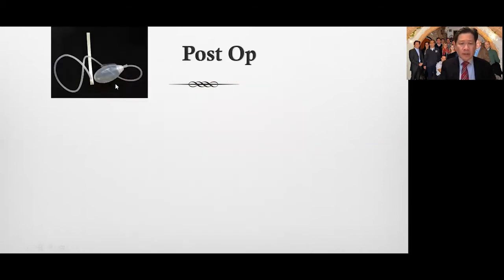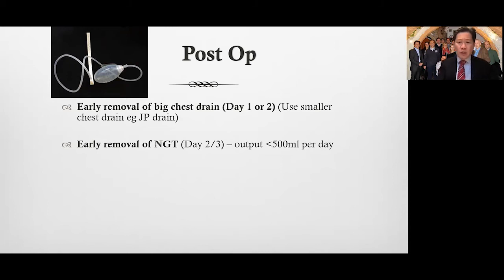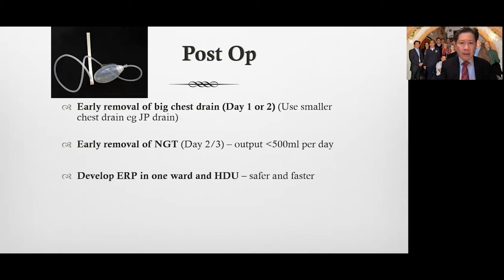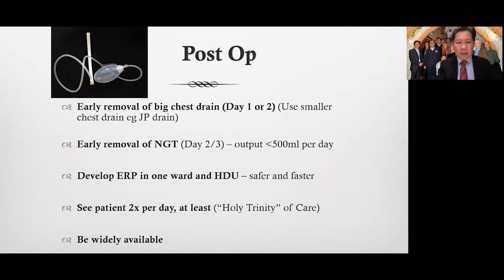Post-operatively, we try to use smaller drains — the Jackson-Pratt drain is more comfortable. If there is a large chest drain, early removal on day one or day two is important. Early removal of the NG tube helps them breathe, cough, and walk, and it's more comfortable for them to rest. Try to develop your enhanced recovery program in one ward and the ICU — this is safer, faster, and means a smaller number of people to educate and teach. Try to see the patient two to three times a day and be widely available for education, as this is a long-term investment for the whole department.